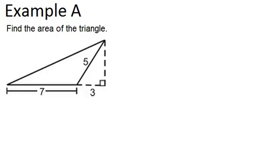So in example A, it says find the area of the triangle. Remember that the area of a triangle is base times height divided by 2. That's because triangles are half of rectangles, and the area of a rectangle is base times height, so therefore the area of a triangle is base times height divided by 2.